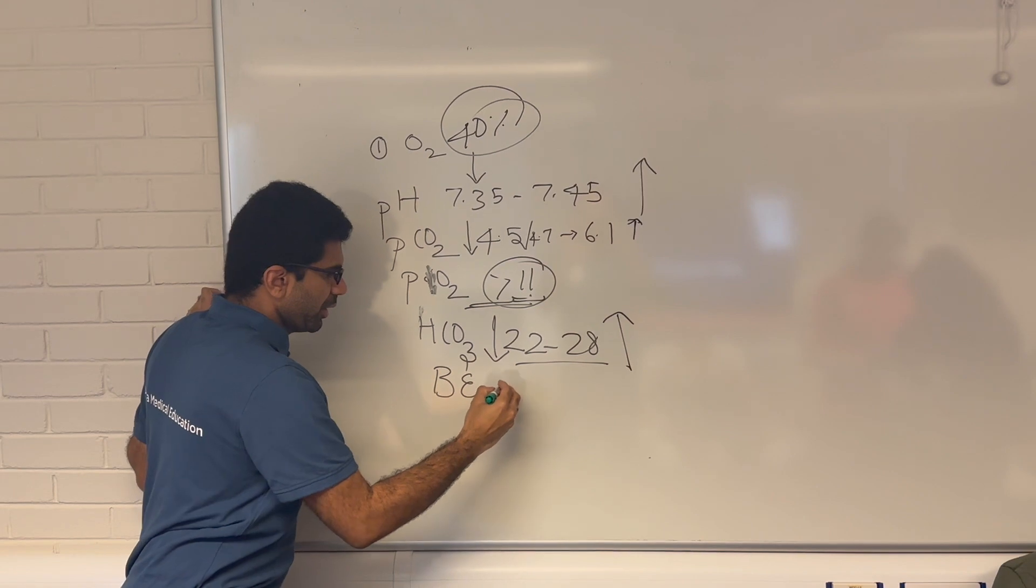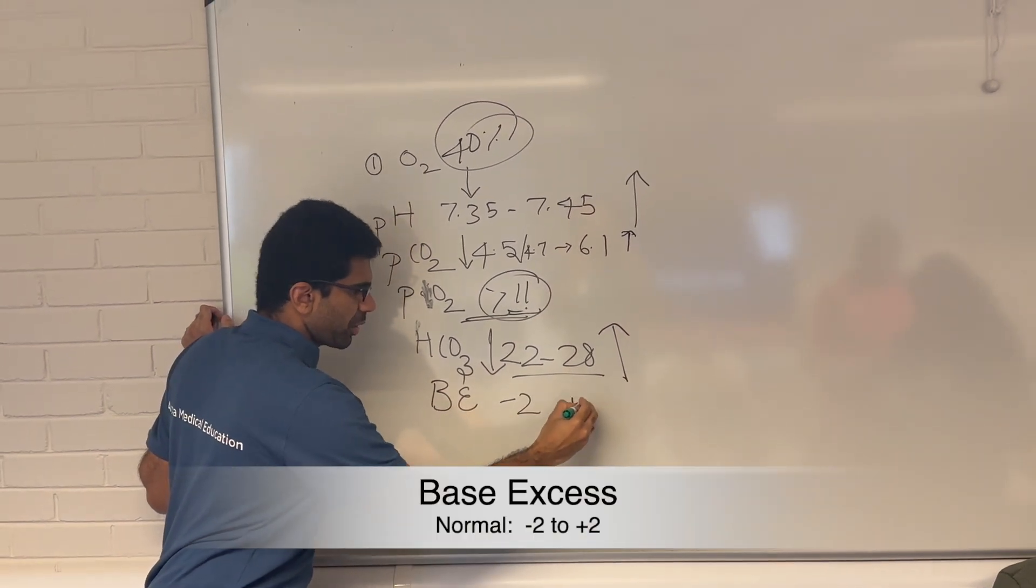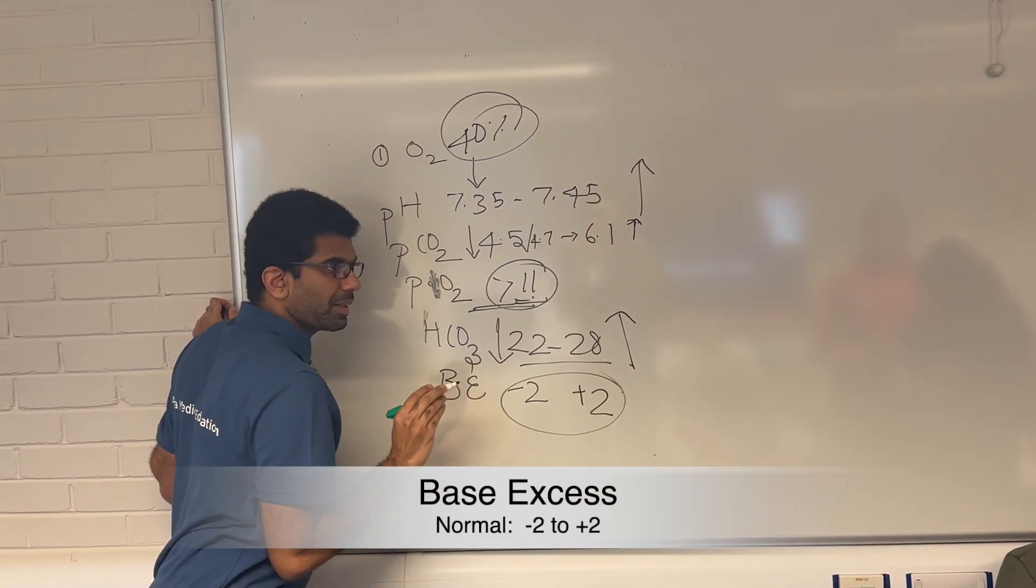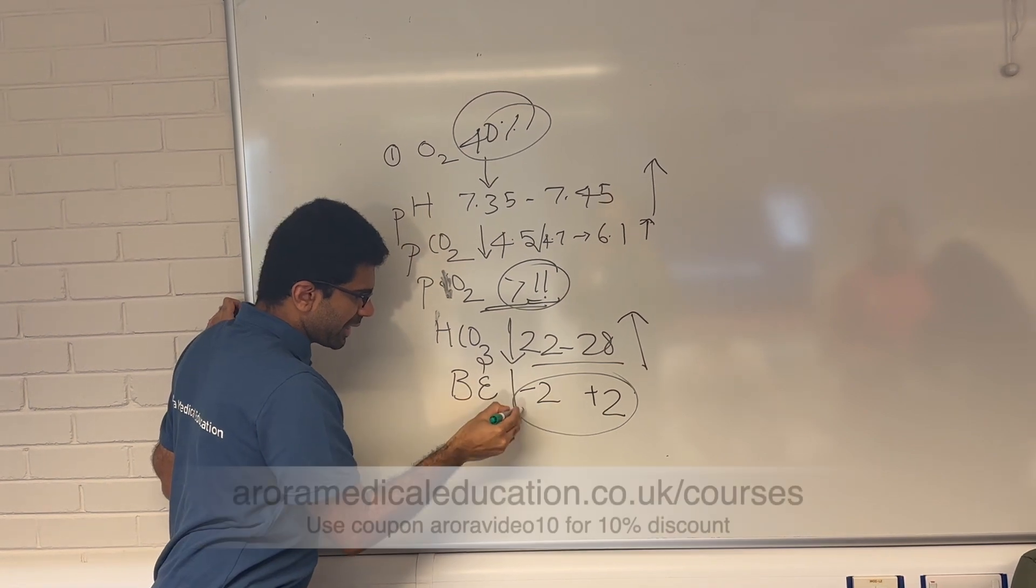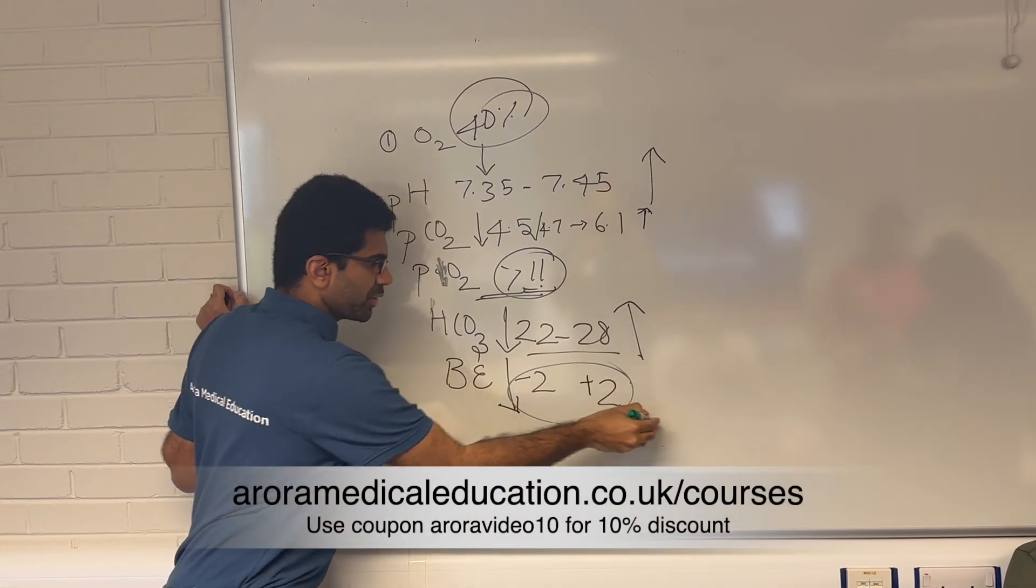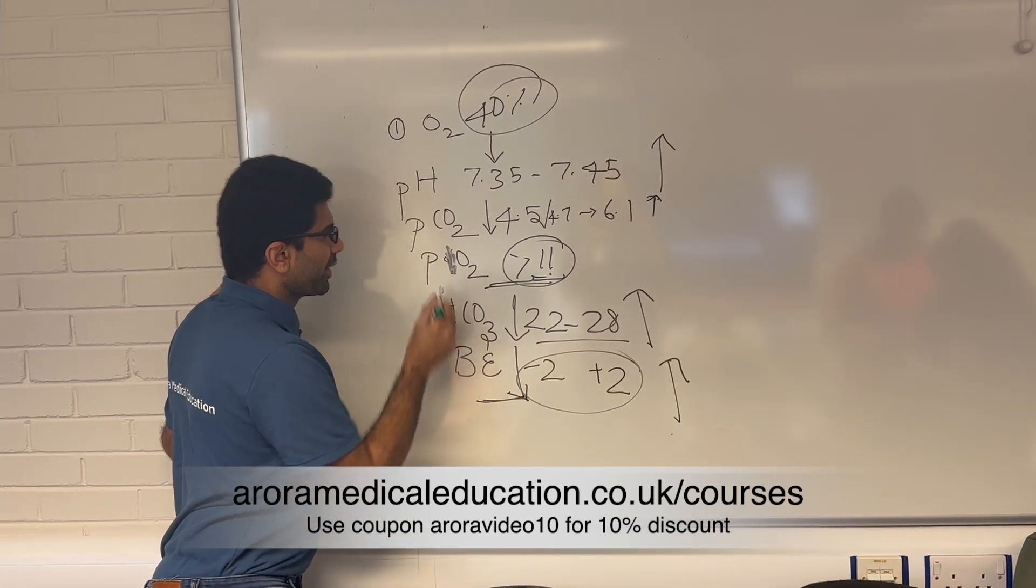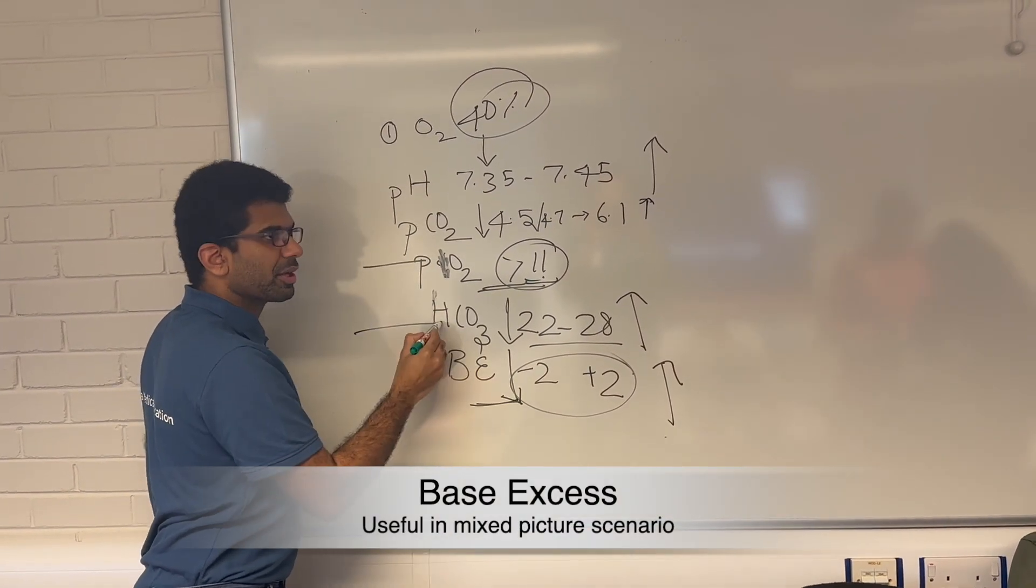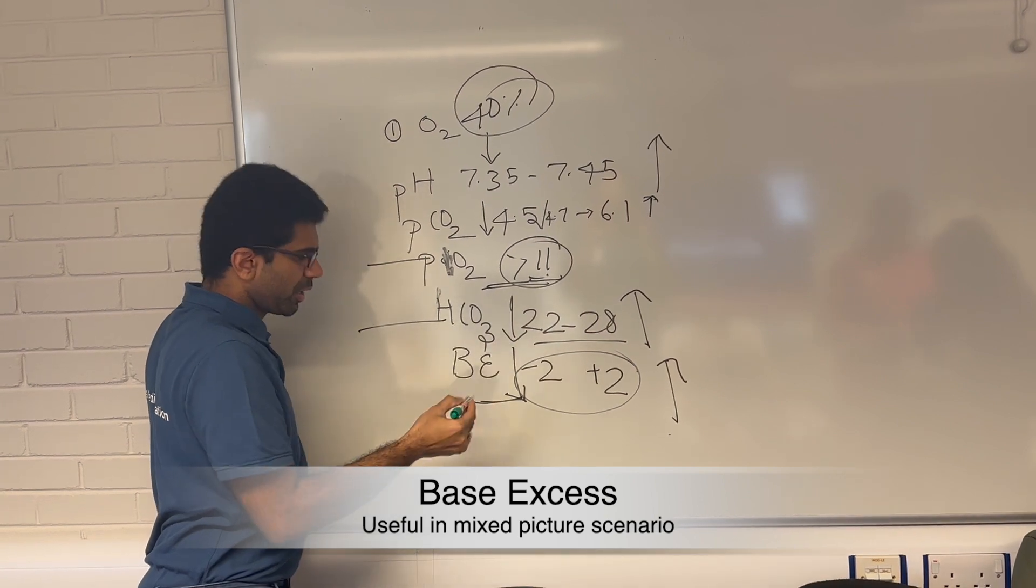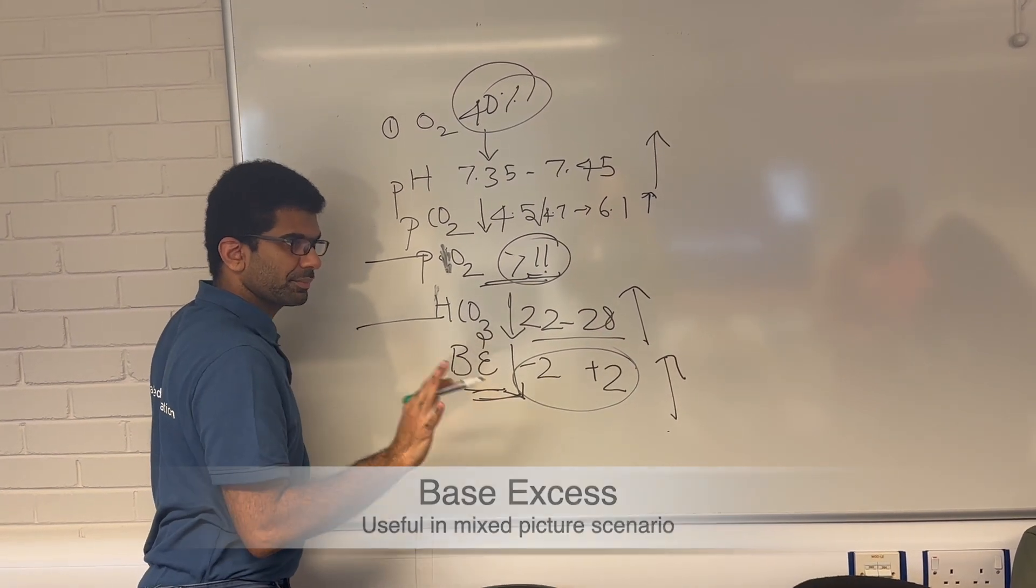Next is base excess. They say minus 2 to plus 2. This is exclusively for metabolic alone. If it is less than this, it is metabolic acidosis. If it is more than this, then it is metabolic alkalosis. This might come into effect if there is a mixed picture. The patient might have respiratory acidosis and metabolic acidosis. In that case, which is predominant to differentiate that you use the base excess.